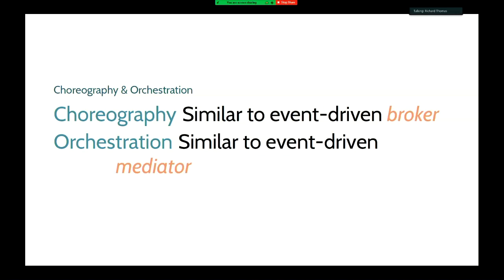In a lot of references when they talk about microservices, they note that all these services have to work together to deliver a system. Sometimes they talk about using choreography or orchestration as mechanisms to get services to work together. We talked earlier about event-driven systems — the broker and mediator approaches. The broker is a simpler approach: it receives messages and manages the publish-subscribe process. The mediator has more internal logic and coordinates the actual process.